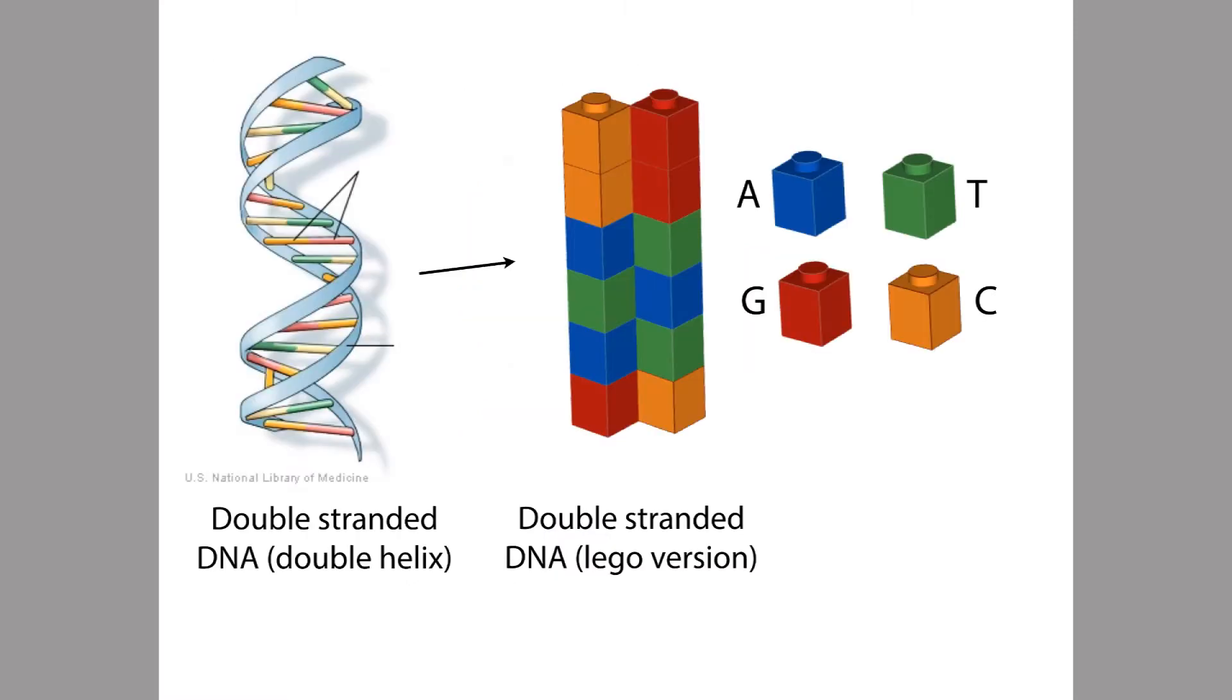We're going to draw double-stranded DNA as a pair of Lego towers that look like this, sort of touching each other. It's as though we took the double helix over here and we untwisted it to make a sort of flat ladder shape, and then used pairs of Legos over here to represent the complementary pairs of bases in the DNA.